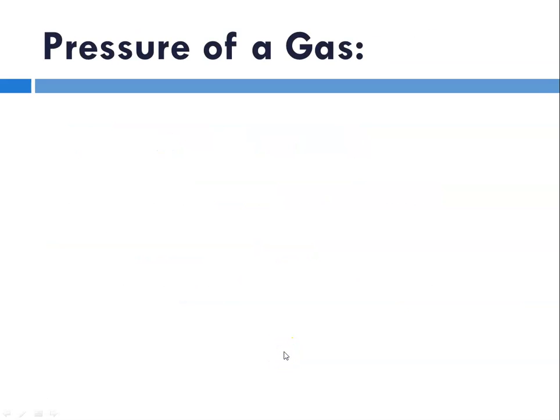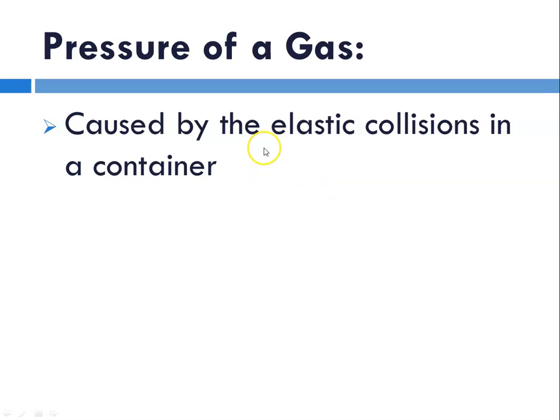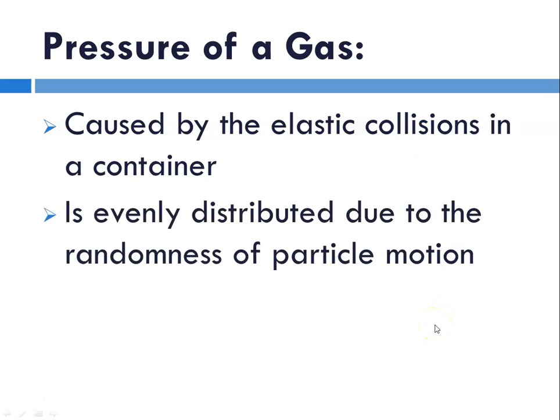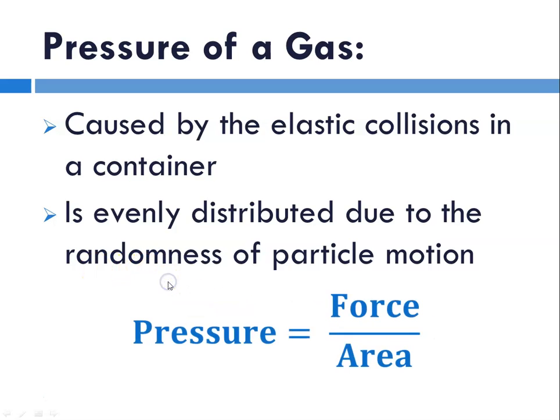We need to remember about the pressure of a gas. The pressure of a gas is caused by collisions in a container and is evenly distributed because the particles are random in their motion. Pressure is defined as force per unit area. In terms of tire gauge pressure, it's pounds per square inch, where pounds are a unit of force and square inch is area.